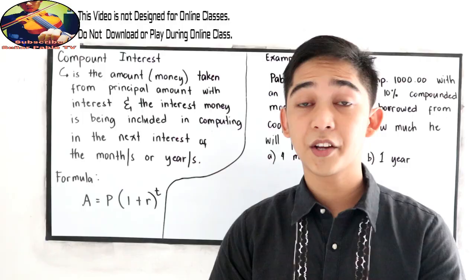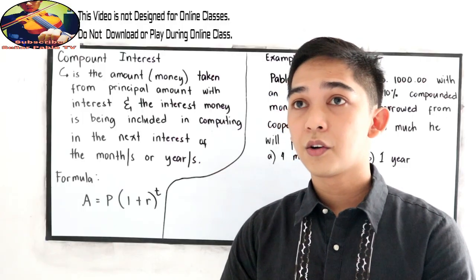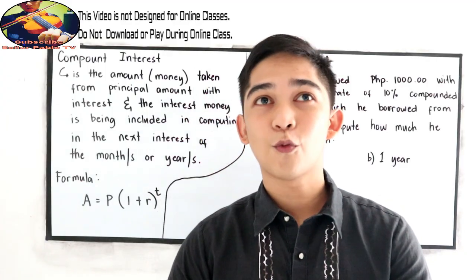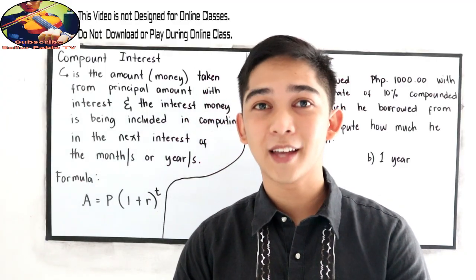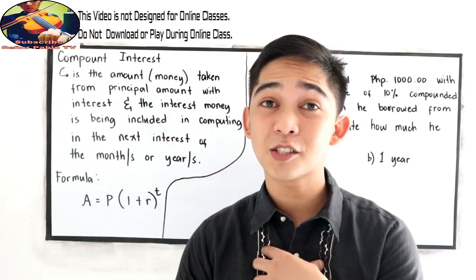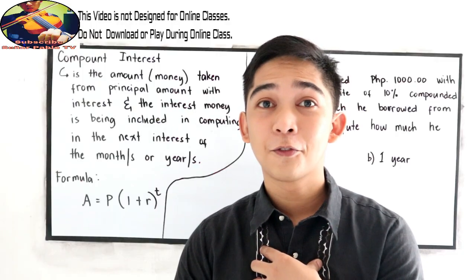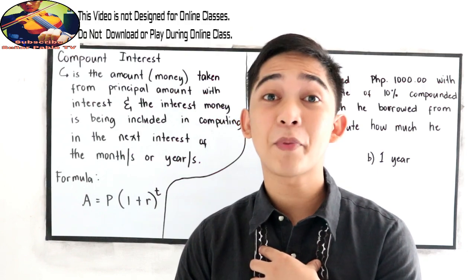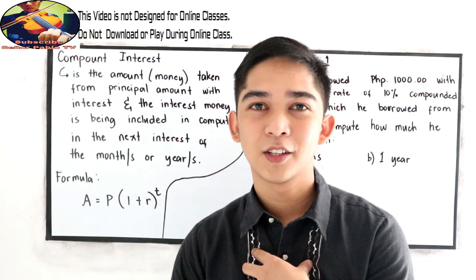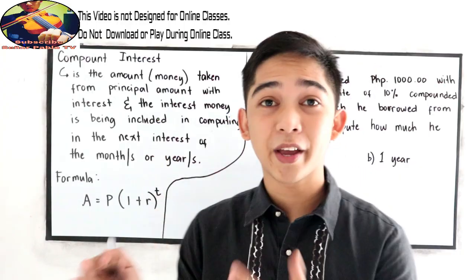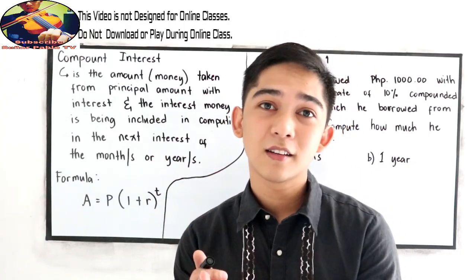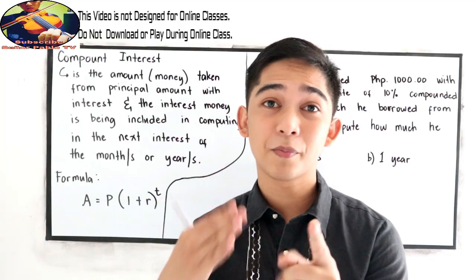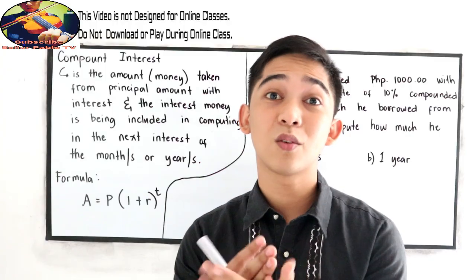For example, I borrowed $1,000 to my friend, then I promised to pay it in five months with 10% interest. So in compound interest, we know that after a month, my $1,000, the borrowed $1,000, will become $1,100.